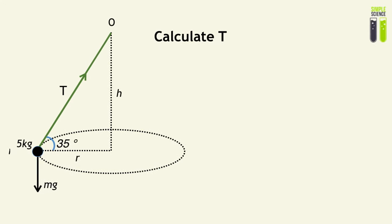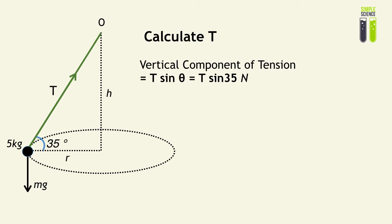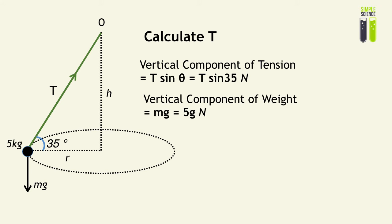Let's look at a simple question that relates tension to the circular motion, where we are asked to calculate T from the given data. We need the vertical component of tension, T sin θ, and the vertical component of weight, which is mg — equal to 5g in this case. So T sin 35 = 5g, which simplifies to give T = 85.42 newtons.